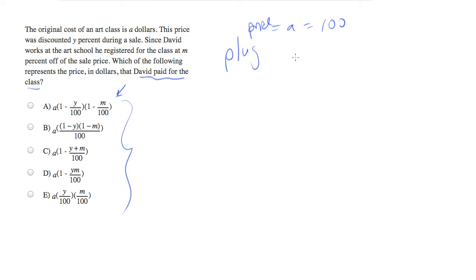And let's say that the discount, which is Y%, is 20%. And David's discount, M, is 10%.